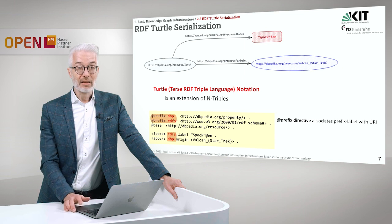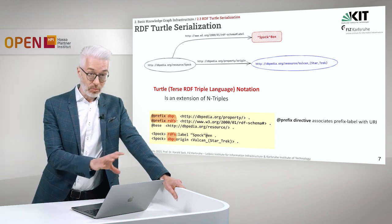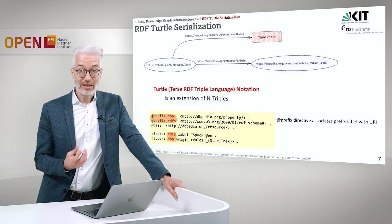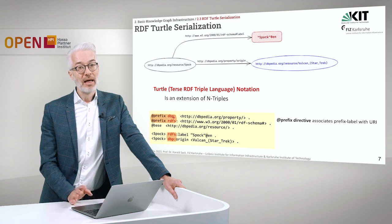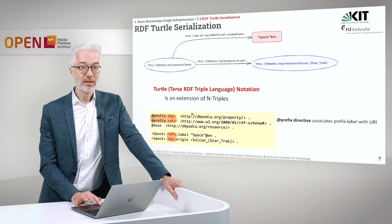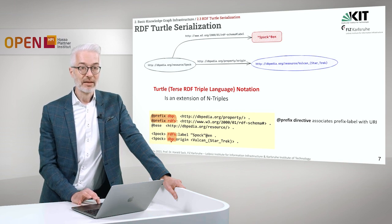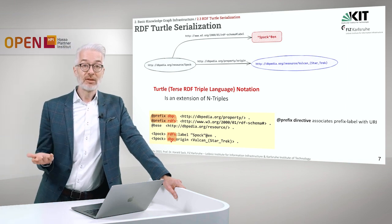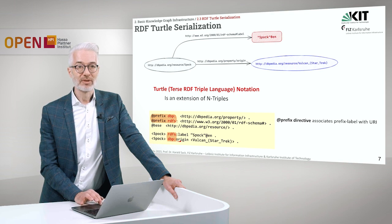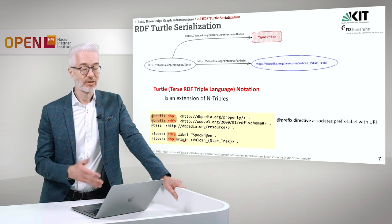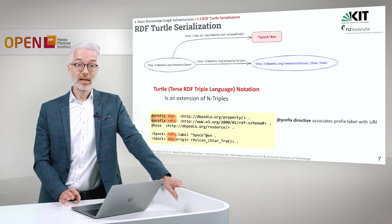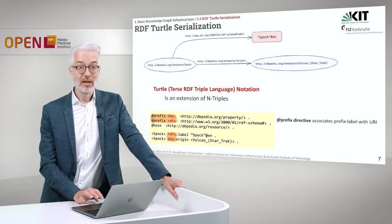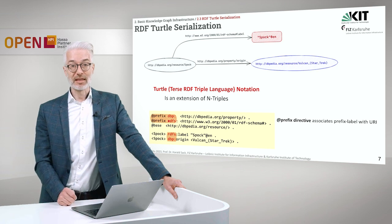First, what you see here is that we are defining so-called prefixes. With the @prefix directive, this associates a prefix label with a URI. For example, in the very first line I define a prefix for DBP, which should be 'http://dbp.org/property/'. Every time I use that prefix further on, it will be substituted by that part of the URI, making it a relative URI. I'm saving a lot of space since I only have to give a prefix definition once, and I can define lots of prefixes.